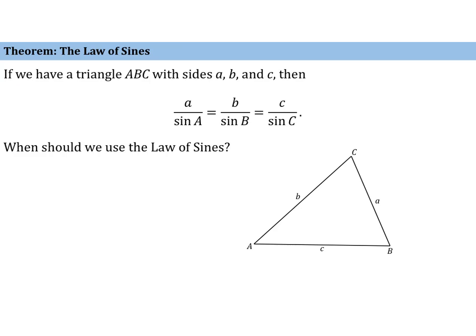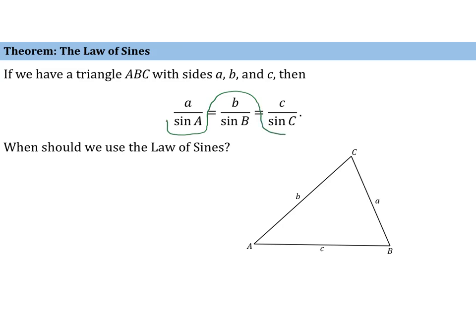Notice that there are three equations. We have a over sine A equals b over sine B. We also have a over sine A equals c over sine C.